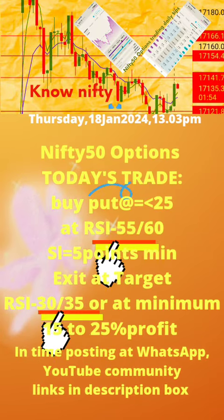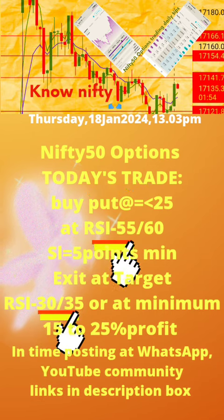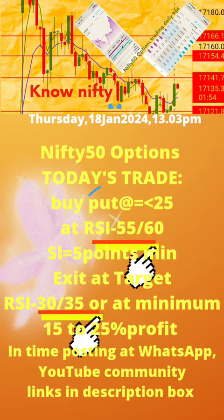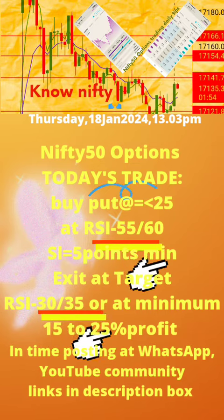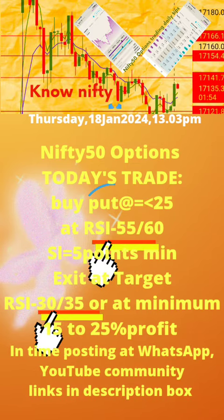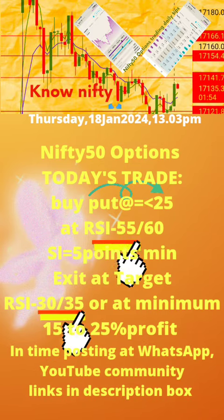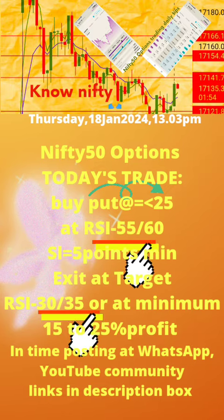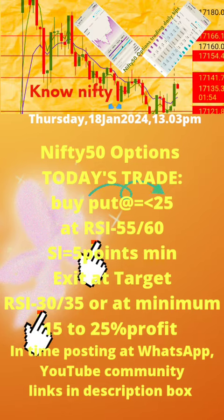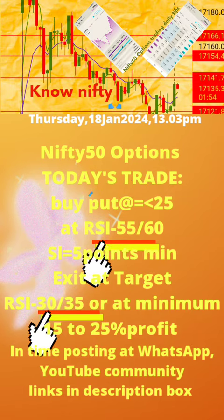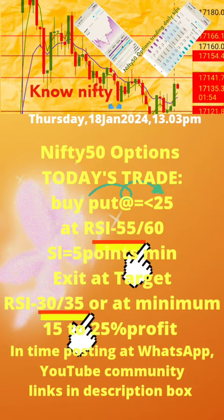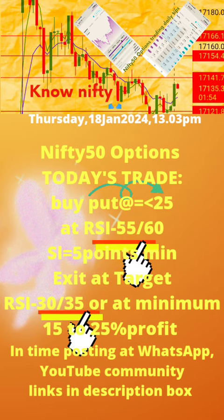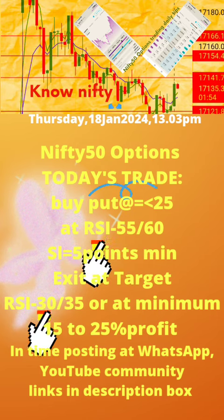Please note: 1. Today's time of post is also mentioned. 2. Buy put or call off strike price with premium value equal to or less than 25, at RSI value updated daily. 3. Apply stop loss of minimum 5 points. 4. Exit at target RSI value updated daily. Now take today's trade as per the updates in this page.